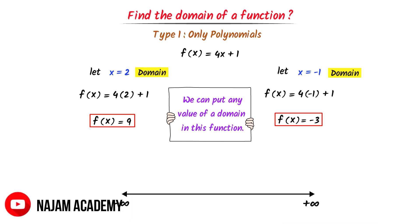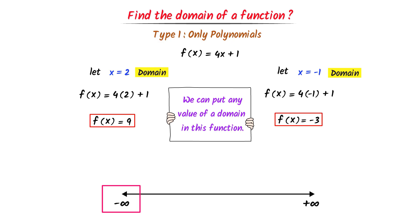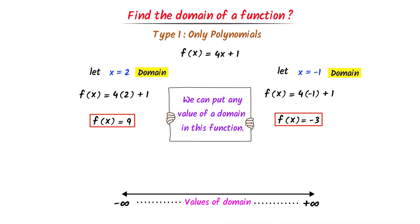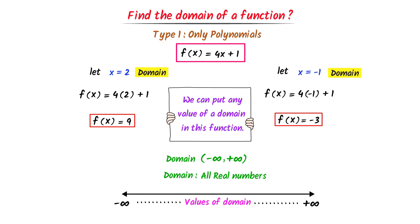From these two results, we conclude that we can put any value as the domain in this polynomial and it is defined. So I draw a number line — negative infinity on one side and positive infinity on the other. The values of domain are present between these infinities. The domain of this function is (-∞, +∞), and we can also write it as all real numbers. If there is a simple polynomial, its domain will always be the set of all real numbers.